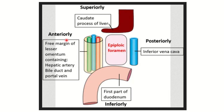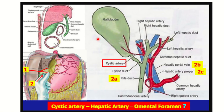With the vascular clamp placed anteriorly, one of the three structures will be clamped. We can see the portal vein and the hepatic artery here. The portal vein carries the maximum amount of blood — about 80% of the blood supply to the liver — so stopping it is most critical. The hepatic artery carries only 20% of the blood.